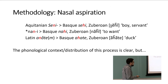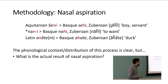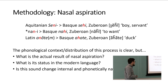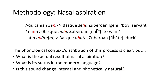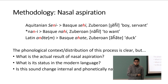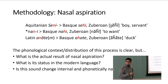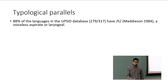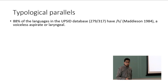The phonological context of this process is clear, but what is the actual result of nasal aspiration phonologically? What is the status in the modern language — is it still contrastive? And is this sound change internal and phonetically natural, such that it could have happened at any time in the history of Basque, or did it require contact? The sound pattern I described created a contrast between H and nasalized H. This opposition is actually quite rare cross-linguistically.